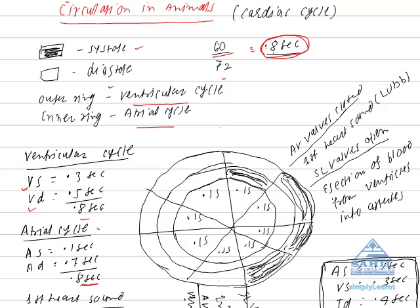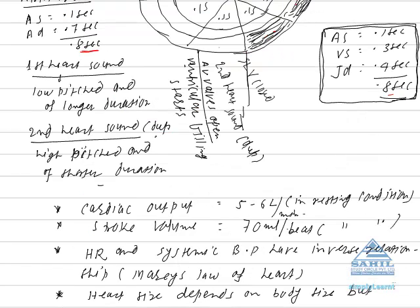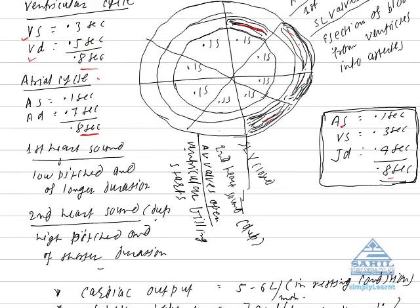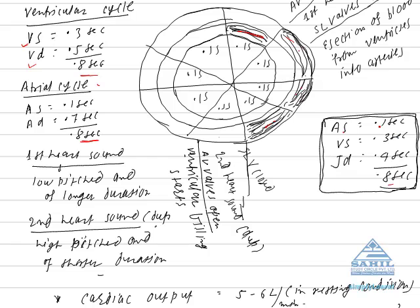0.8 seconds atrial cycle, 0.8 seconds ventricular cycle. Total duration of the cycle is also 0.8 seconds. Atrial systole and ventricular systole do not overlap, so we take their time separately.